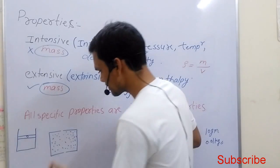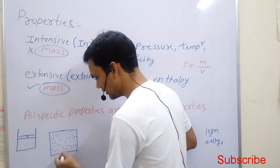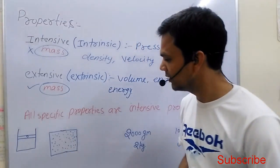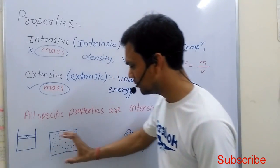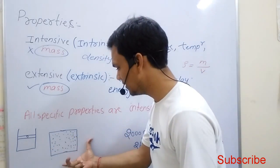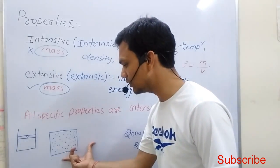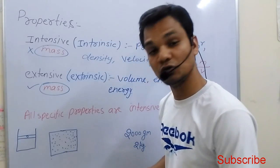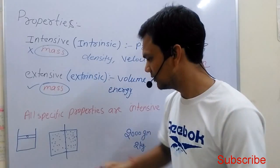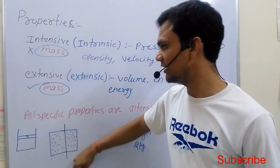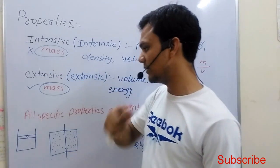But if we take extensive properties, such as volume - if we measure the volume of the system, suppose it is 200 ml of liquid. If you divide it into two parts, there is 100 ml and 100 ml. So extensive properties depend on mass.